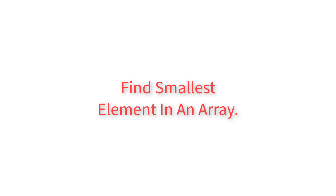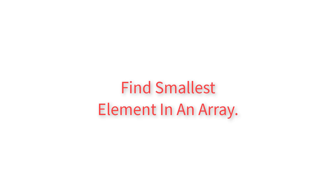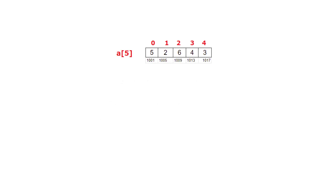Let's write a C program to find the smallest element in an array. We have an array variable `a` of 5 numbers. We take another variable called `small` and assign the first element of this array to variable `small`, which is present at `a[0]`.